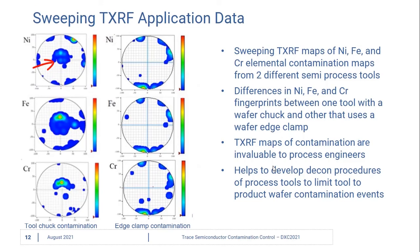On this second wafer, the nickel, iron, and chromium contamination was located mainly around the edge of the wafer. This processing tool used a wafer edge clamp made of stainless steel, and that was determined to be the source of the contamination on this wafer.